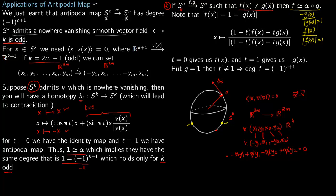If we put g equal to the identity map, and if f does not fix any point, meaning f(x) is not equal to x for all x, then f is homotopic to the antipodal map composed with the identity. Therefore the degree of f equals the degree of the antipodal map, which is minus one to the power of n plus one.